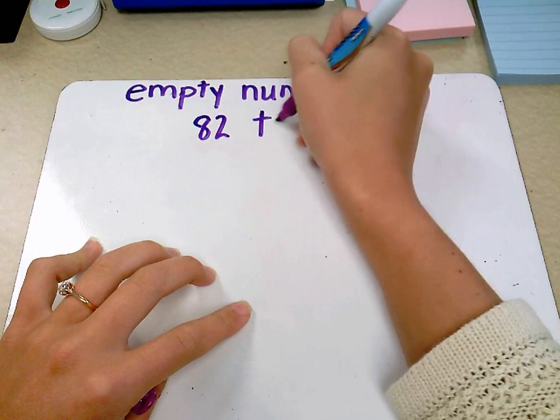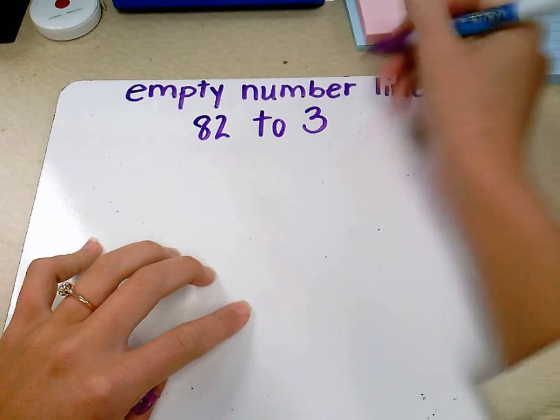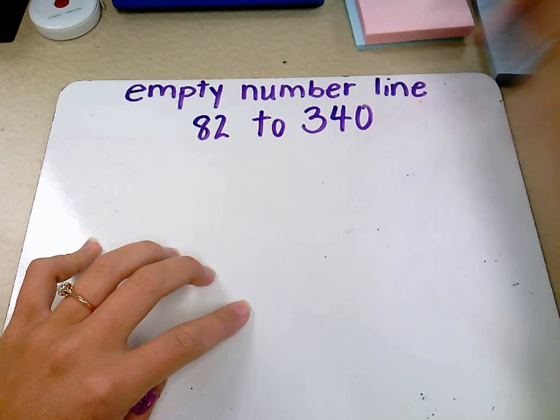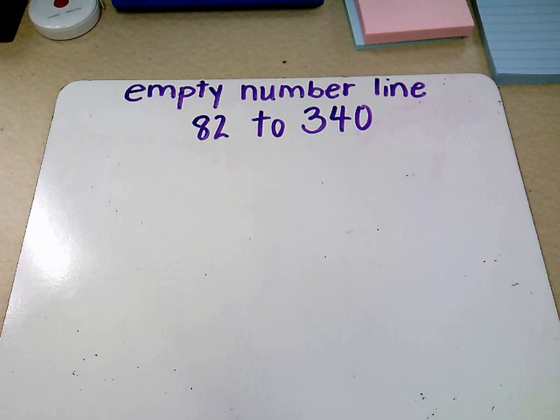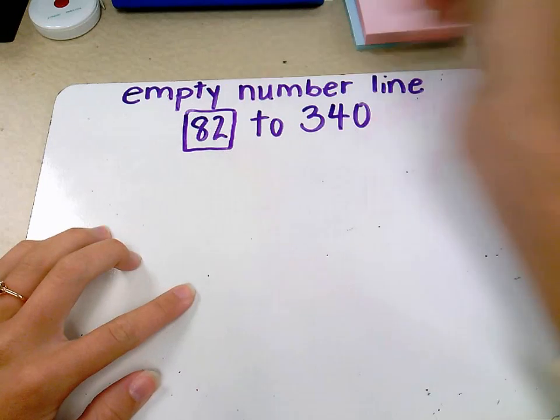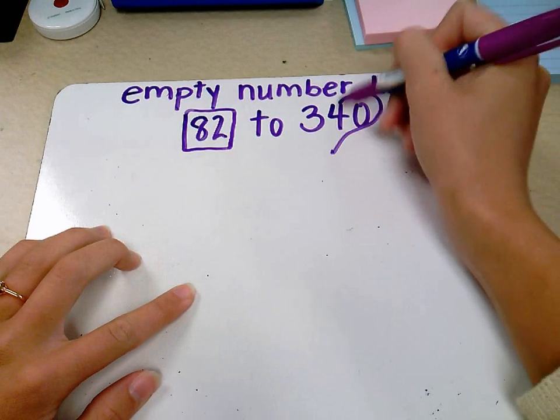82 to something like 340. So when the kids see this problem, I tell them the first step is to box their starting point. And what I want them to do is just identify where they're going to start and where they're going to end up. I tell them to draw a heart around it because we love to end up at our goal.